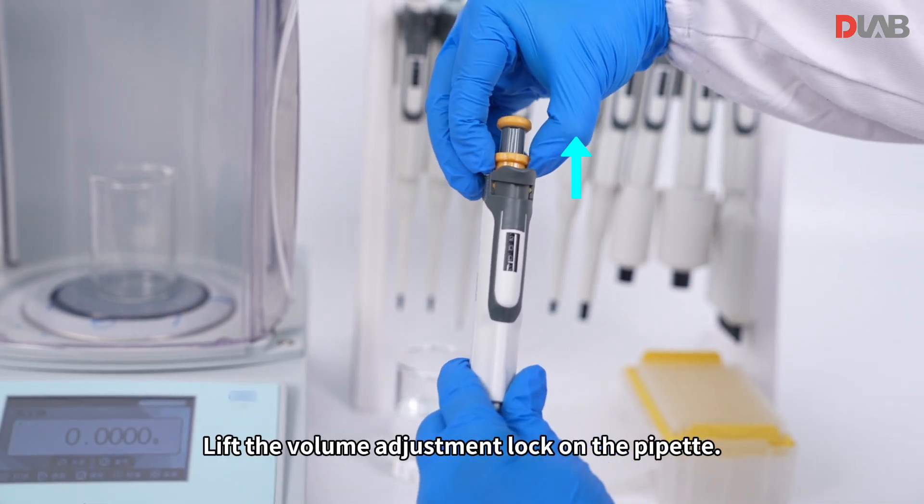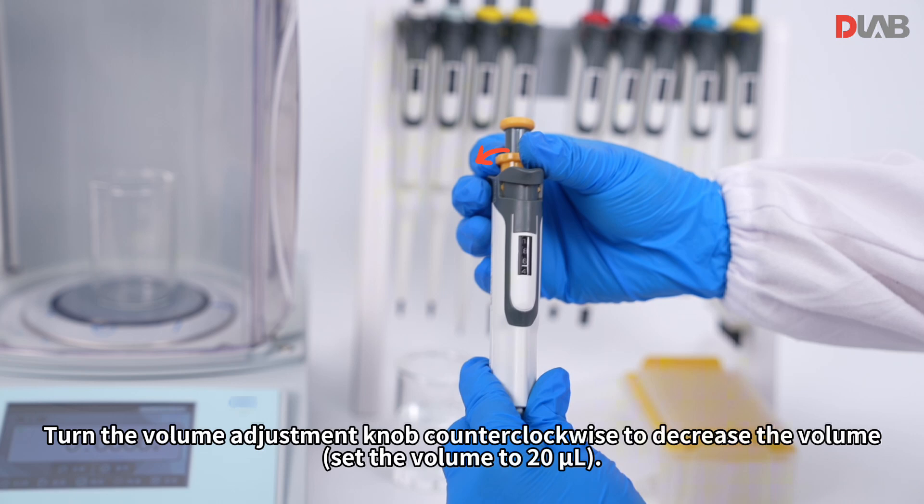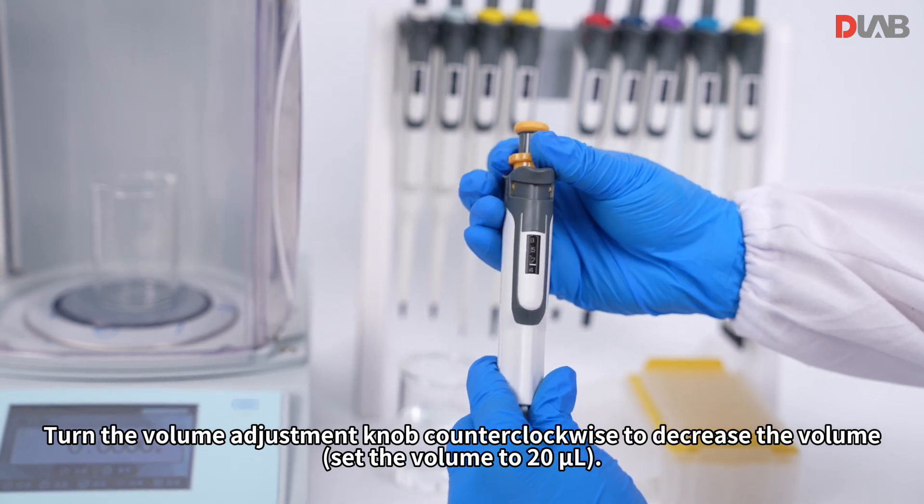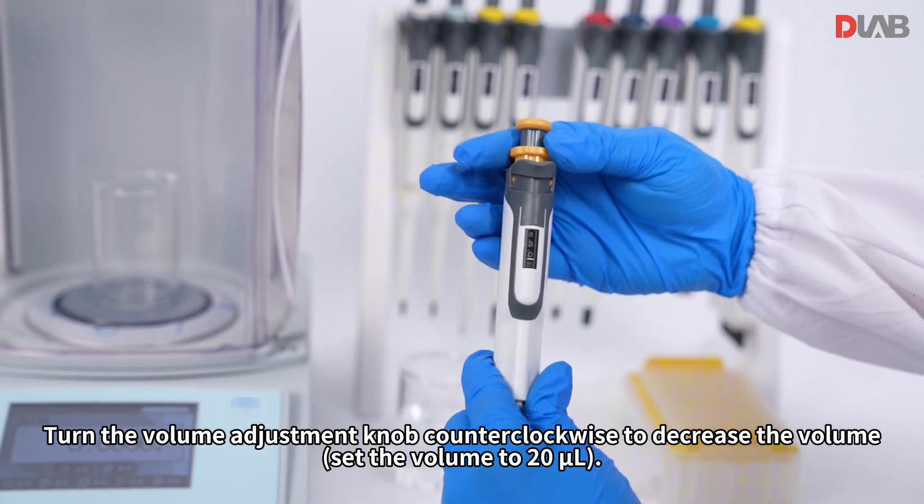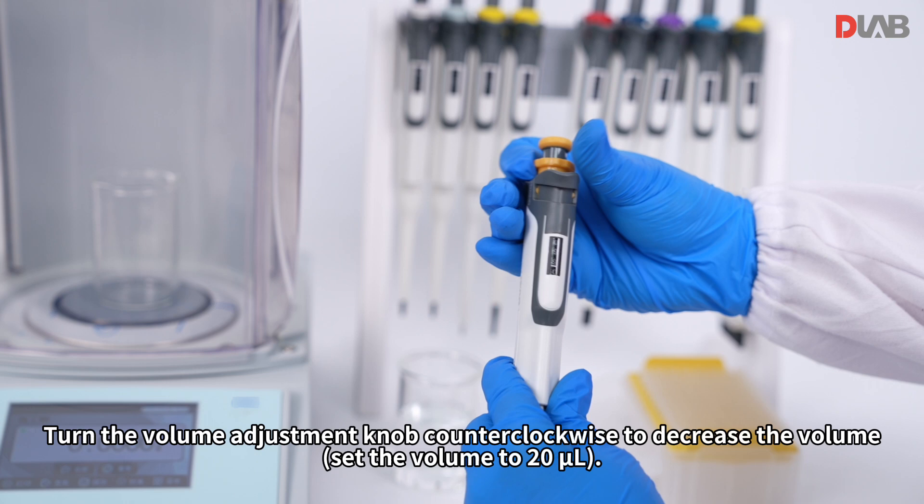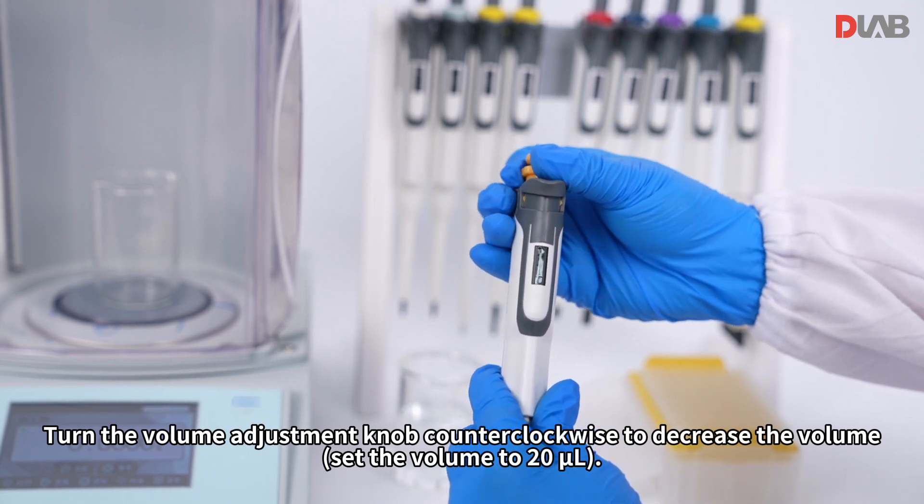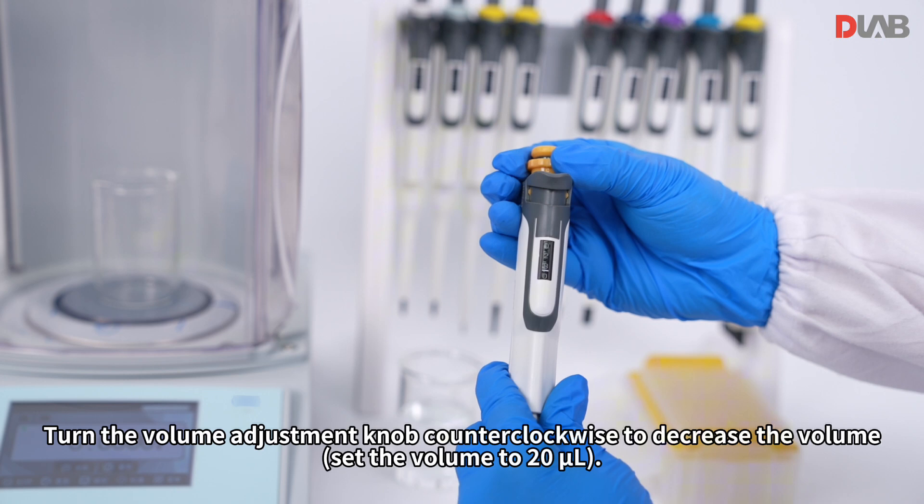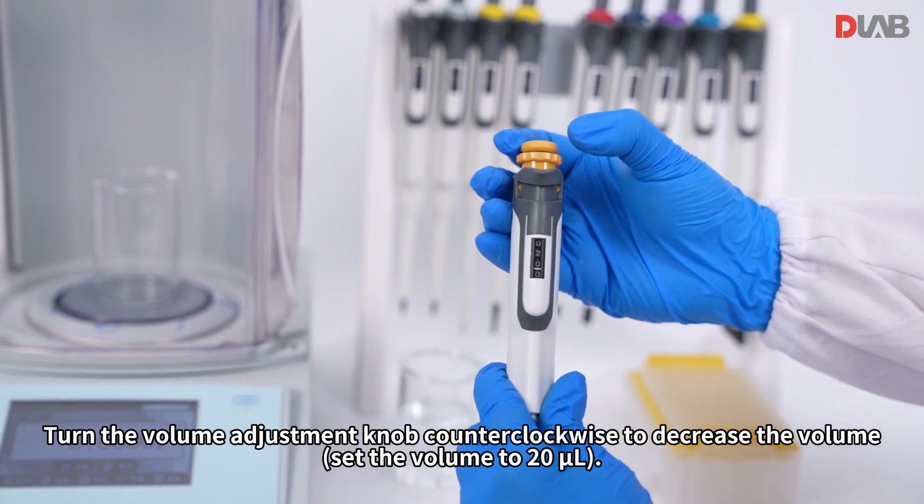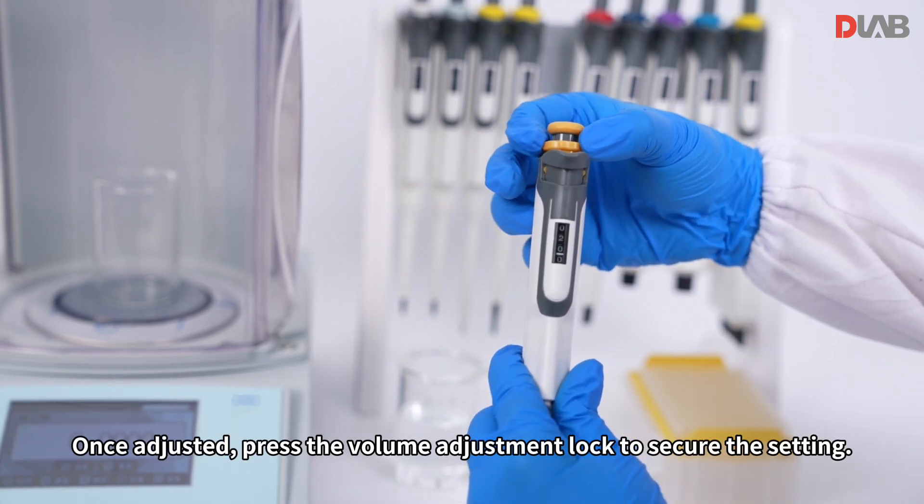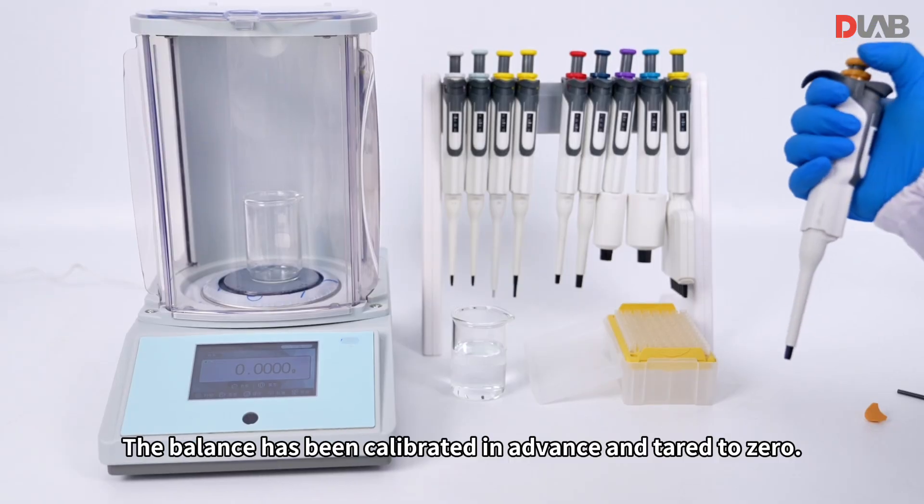Lift the volume adjustment lock on the pipette. Turn the volume adjustment knob counterclockwise to decrease the volume. Once adjusted, press the volume adjustment lock to secure the setting.